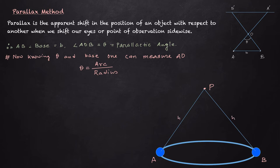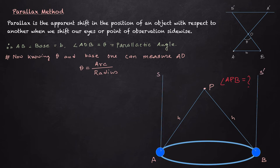Let the distance be H. We need to find the parallax angle, that is angle APB. To find this, we need to choose two reference points — two very distant stars S and S prime — whose positions and directions with respect to Earth are always fixed. Let their distances be H prime. We need to find the angles SAP and S prime BP. If we can measure these two angles, then we can find the parallax angle very easily. Let these two angles be theta one and theta two.